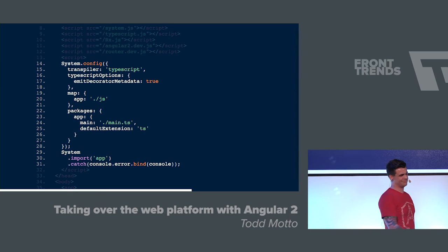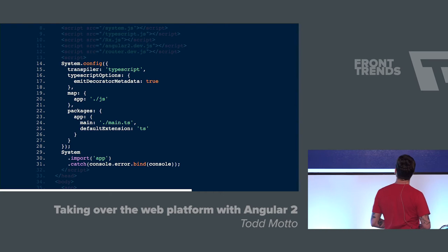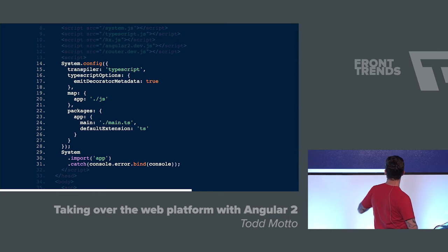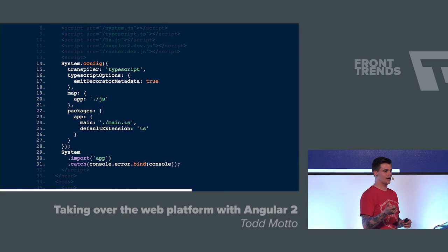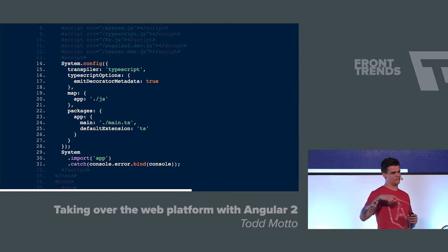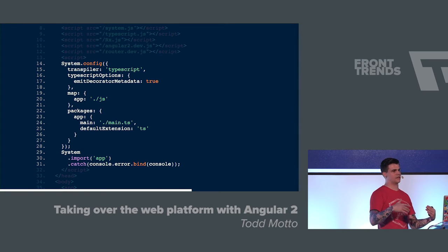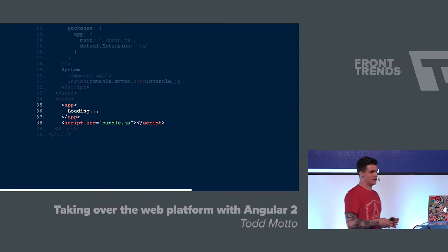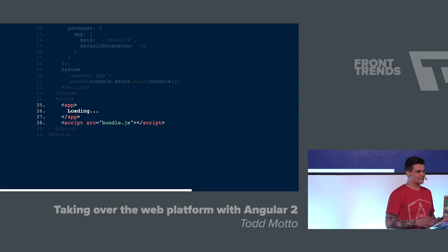System.js is a module loader. In the map config, I say have a look at my app — it's going to be .js files. I've got main.ts, which is where my main TypeScript file is located. Then it goes and fetches all the modules without you including individual script tags. Some people might ask why we're rendering everything with JavaScript — stay tuned.